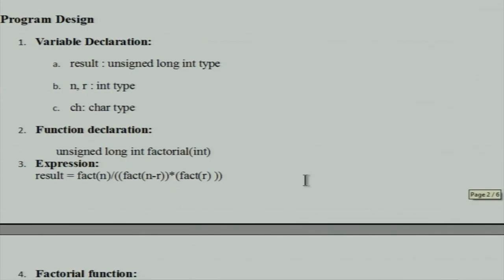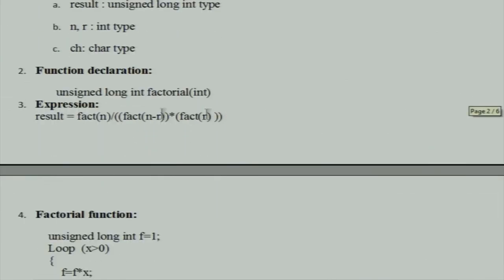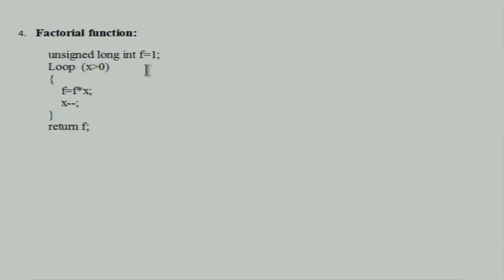Here is the factorial function — we use a loop to compute factorial. The return type is unsigned long int, and the function takes one parameter of integer type. The expression computed is result = factorial(N) / (factorial(N-R) * factorial(R)). Inside the factorial function, we initialize f = 1, then loop while x > 0: f = f * x, x--. Finally we return f. The problem with factorial is it can compute up to 12 factorial maximum because we use unsigned long int to hold the result.